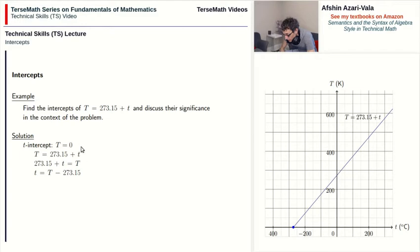Now for the lowercase t intercept, capital T has to be zero. So we replace capital T with zero and simplify. And now we have our lowercase t intercept. It's the point negative 273.15 and zero. Keep in mind that an intercept is a point, not a number. Therefore you have to give the coordinates for both q1 and q2, in this case for lowercase t and capital T.